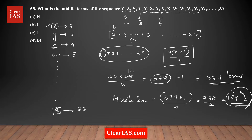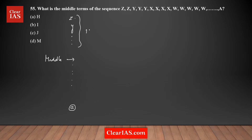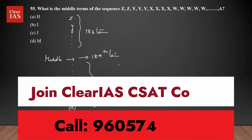The next step is to figure out what the 189th term actually is. Starting from Z, going through Y and so on, there will be 188 terms before the middle term and 188 terms after it, with the 189th term in the center. The sequence ends with A repeated 27 times.